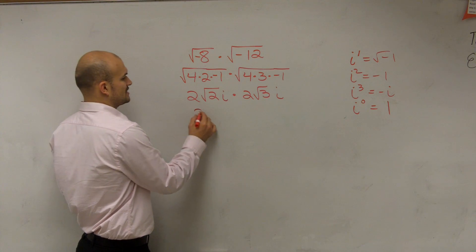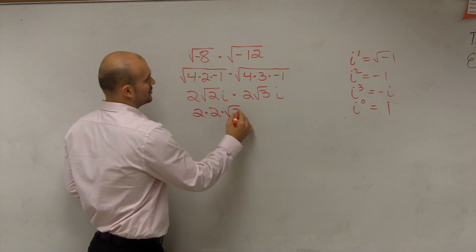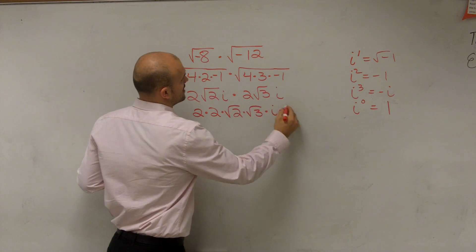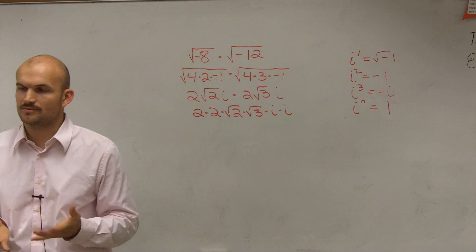So it's going to look something like this: 2 times 2 times square root of 2 times square root of 3 times i times i. You've got to remember you can multiply them.